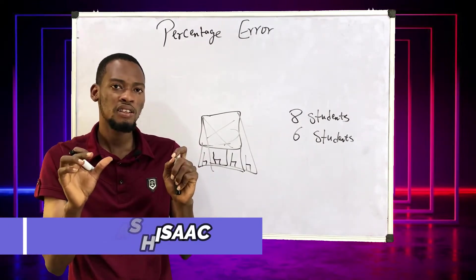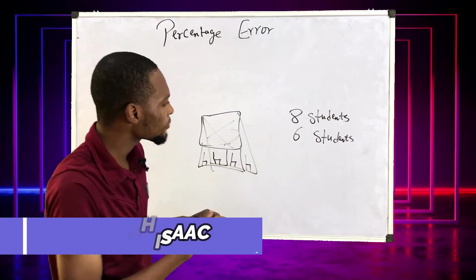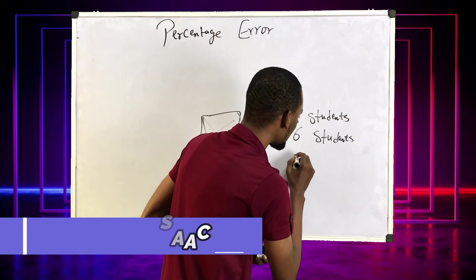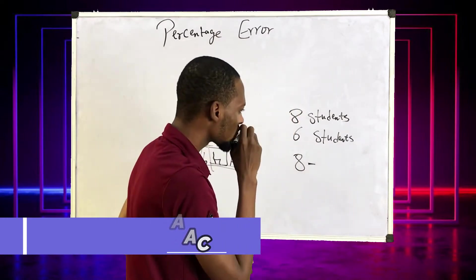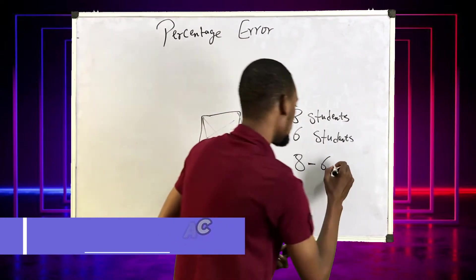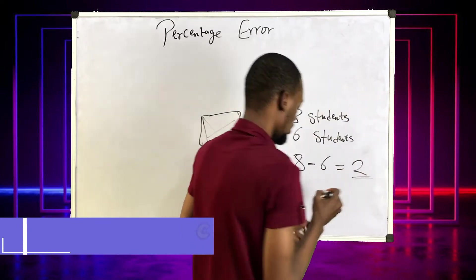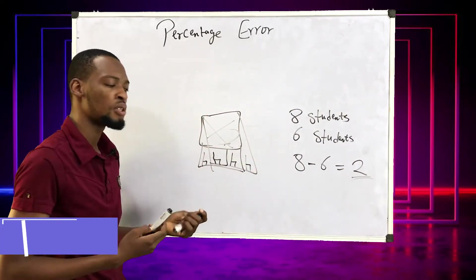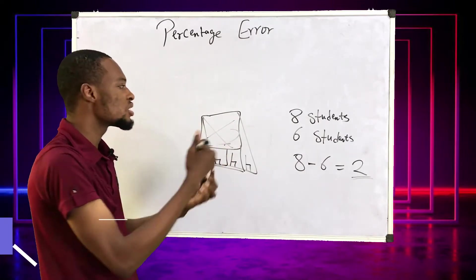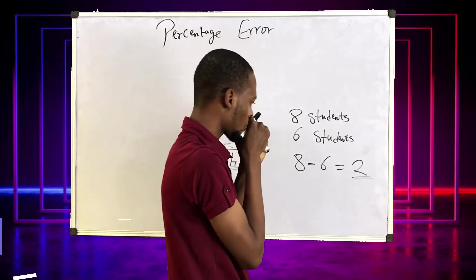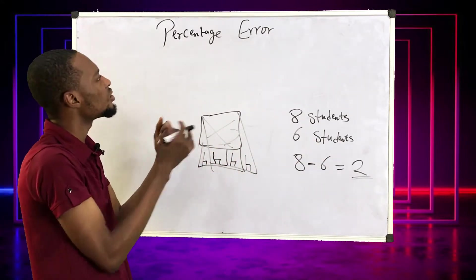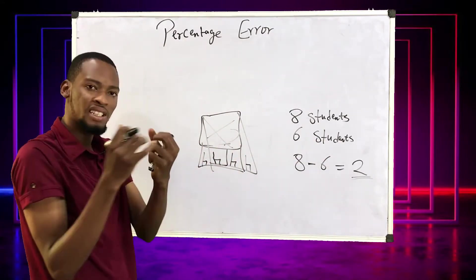In this case you've made an error — it's not correct. The error is eight, your guess, minus six, the actual value. This equals two. So that is your error — you added two which is not supposed to be there. Now is this different from percentage error? Slightly.